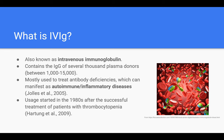IVIG contains the immunoglobulin of several thousand plasma donors, so in one treatment anywhere between 1,000 to 15,000 different people's plasmas can be in it. It is mostly used to treat antibody deficiencies, specifically the autoimmune and inflammatory diseases that can manifest from such deficiencies. Usage started in the 80s after it was successful in treating patients with thrombocytopenia, which is an ailment where the patient has insufficient platelet levels.